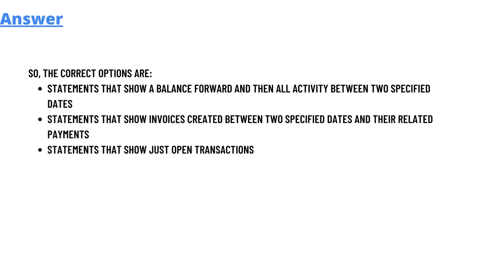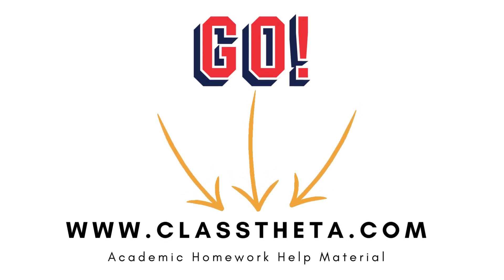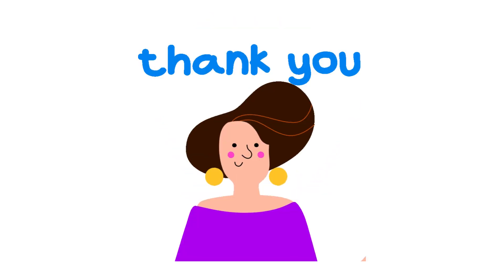The correct options are: statement that shows a balance forward and then all activity between two specified dates; statement that shows invoices created between two specified dates and their related payments; and statement that shows just open transactions.